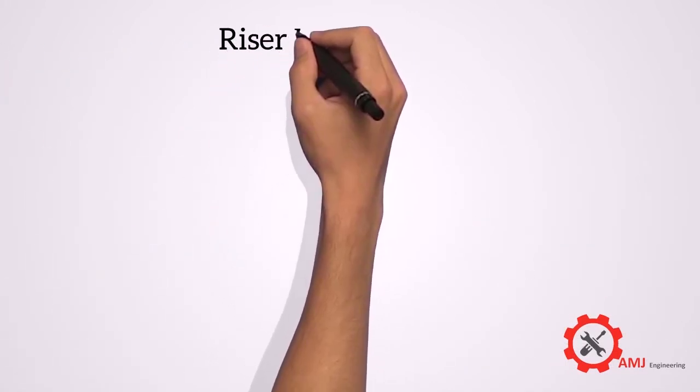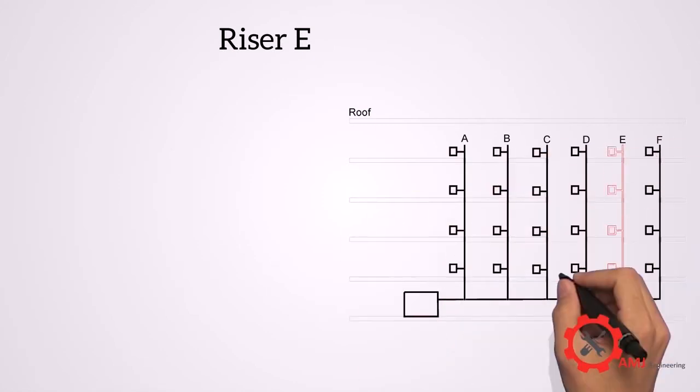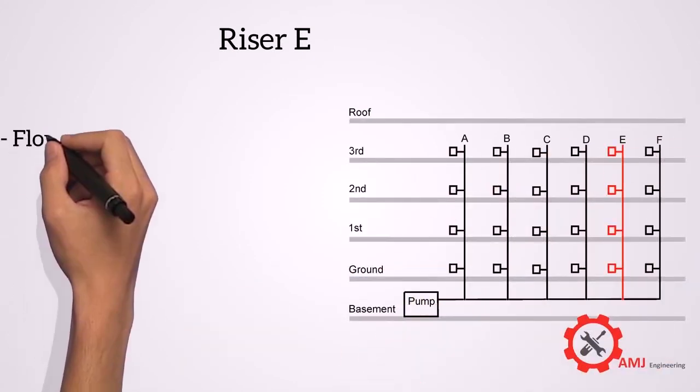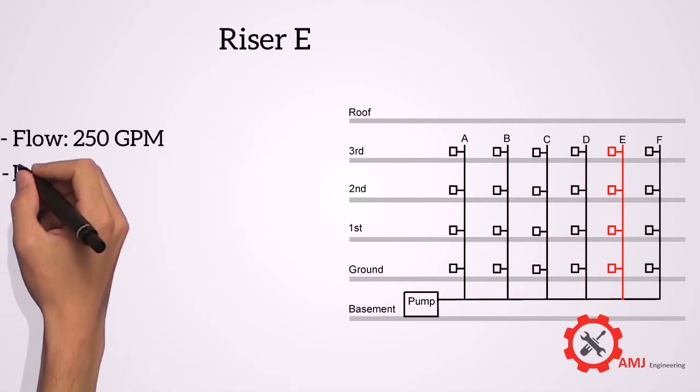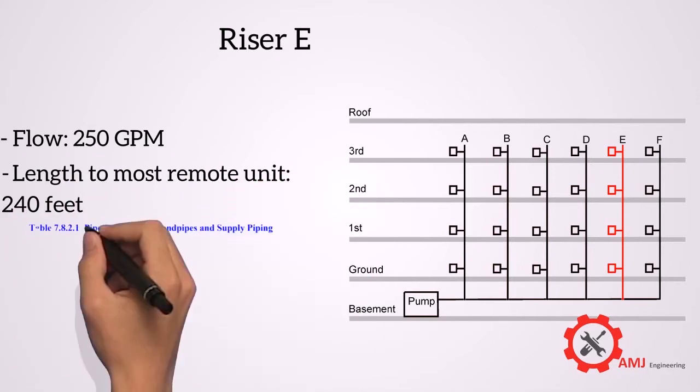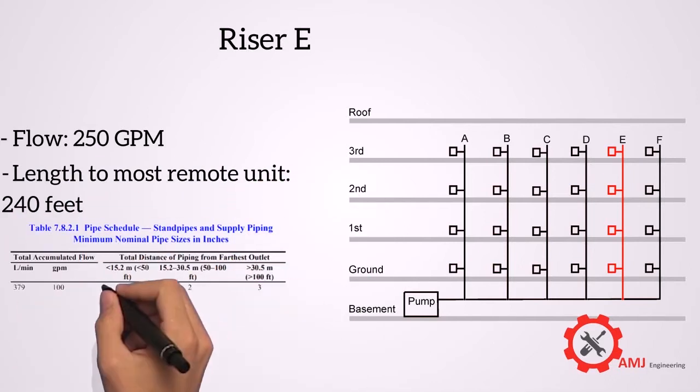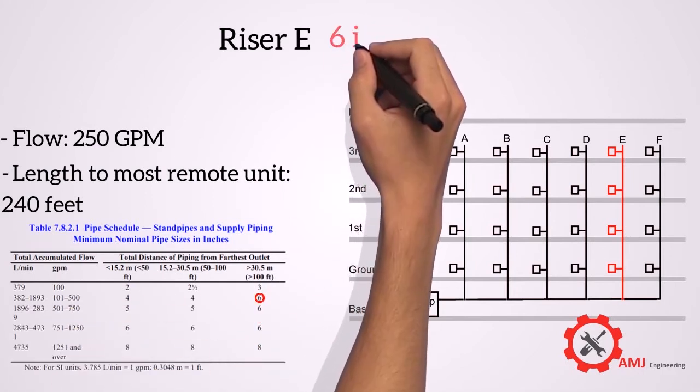For riser E, the flow is 250 GPM, which is the flow in all risers other than riser F. The length to most remote outlet on riser E is 240 feet. So from the table the required pipe size is 6 inches.